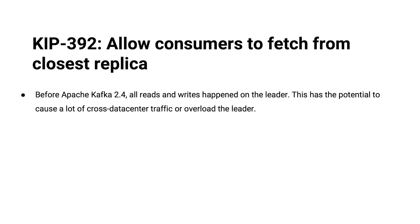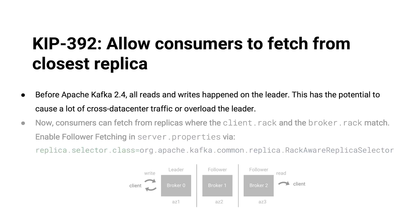Now, before this KIP, a consumer would always consume — it would always read from the lead partition. There were follower partitions, but they were just there for redundancy; they couldn't be read from. Now we can read from those potentially.